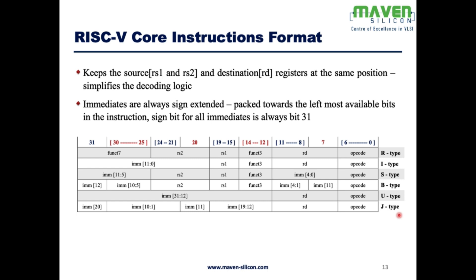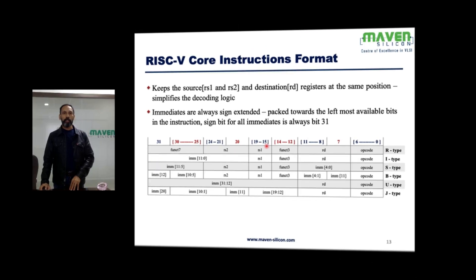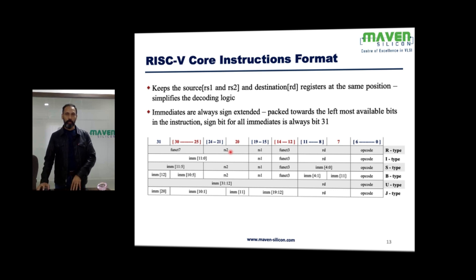Let me briefly explain what each type means. When we say register type, it involves three registers: two source registers RS1 and RS2, and one destination register Rd. RS1 and RS2 are the operands. Whatever operation is defined by funct3 and funct7 will be performed between RS1 and RS2, and the result will be stored in the destination register. That's why it's called register type.